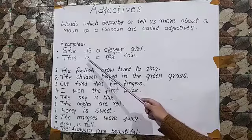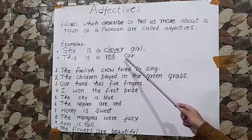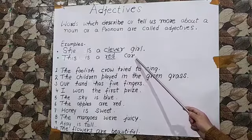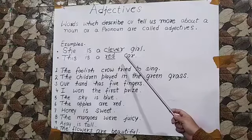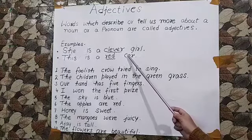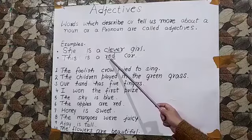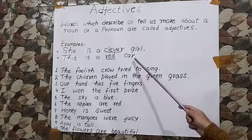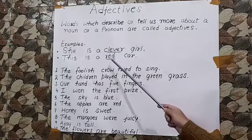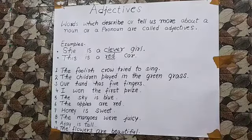This is a red car. Now car is a noun in this sentence. What is being described about the car? The color red is being described about the car. So red is an adjective in this sentence.